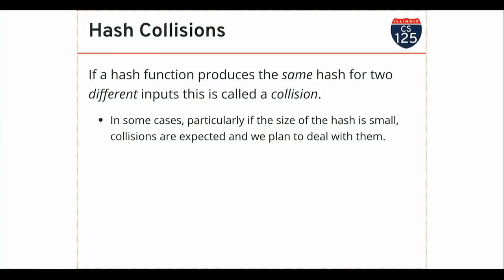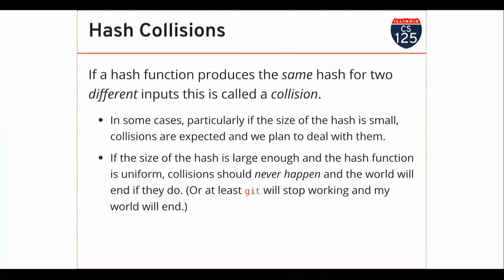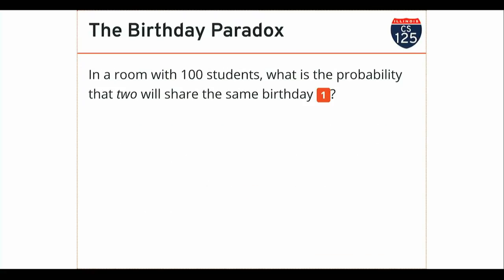In some cases we expect collisions to happen, but if the size of the hash is large enough and the hash function is actually really uniform, then we don't expect collisions to happen. Git will just melt down if there's a collision — it has no ability to deal with this. It expects that if two files hash to different values, those files are different.